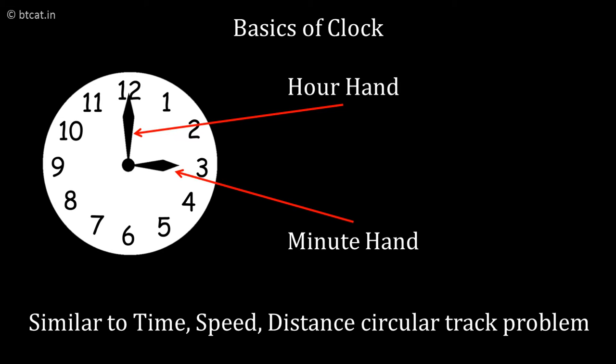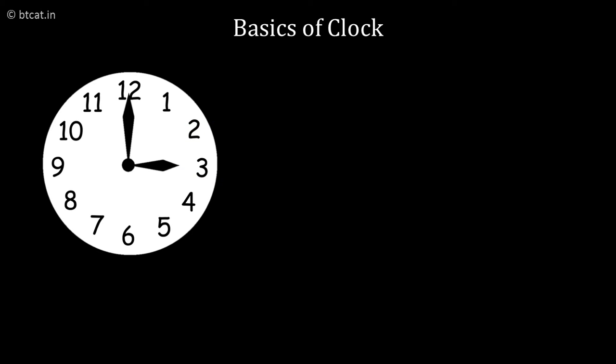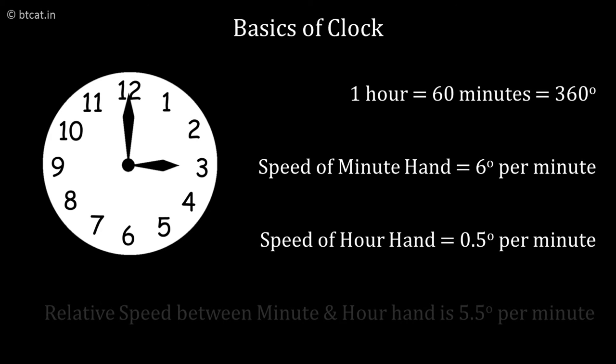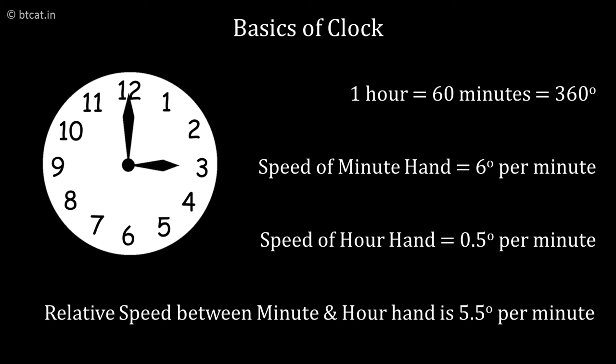Let us first find out the speeds. The minute hand will cover the entire circle in one hour, which is 60 minutes, which is 360 degrees. Therefore, the speed of minute hand is 6 degrees per minute. The speed of hour hand by the same logic is 0.5 degrees per minute. Therefore, the relative speed between them is 5.5 degrees per minute. That is the first fundamental of clock because they are in the same direction.